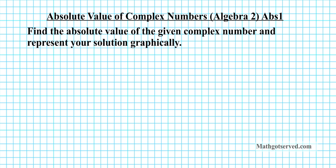To get started, there is a key formula you need to know and a procedure for graphing. The formula for finding the absolute value of complex numbers — if you have a complex number z equals a plus bi — you're going to be using the Pythagorean theorem: c squared equals a squared plus b squared.